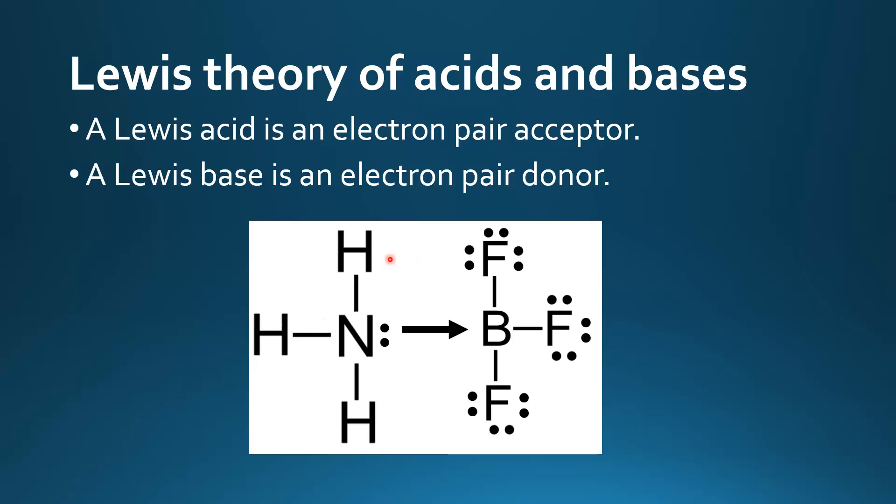So in this example here we have ammonia and boron trifluoride. Ammonia has a lone pair of electrons which it's using to form a dative covalent bond with the boron trifluoride. Boron trifluoride has an incomplete octet, it only has 6 electrons in its valence shell, therefore it can accept an electron pair from the ammonia to form a dative covalent bond.